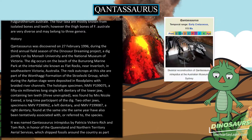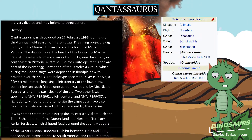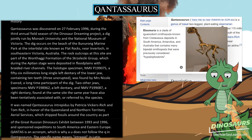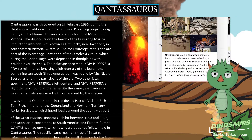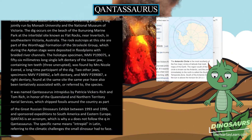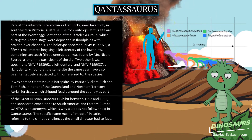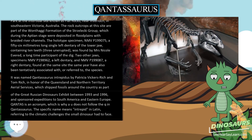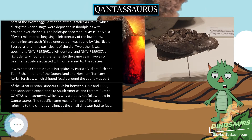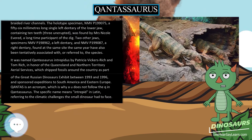Two other jaws — specimens NMV P198962, a left dentary, and NMV P199087, a right dentary — found at the same site the same year have also been tentatively referred to the species. It was named Qantasaurus intrepidus by Patricia Vickers Rich and Tom Rich, in honor of the Queensland and Northern Territory Aerial Services, which shipped fossils around the country as part of the Great Russian Dinosaurs exhibit between 1993 and 1996, and sponsored expeditions to South America and Eastern Europe. Qantas is an acronym, which is why 'U' does not follow the 'Q' in Qantasaurus. The specific name means 'intrepid' in Latin, referring to the climatic challenges the small dinosaur had to face.